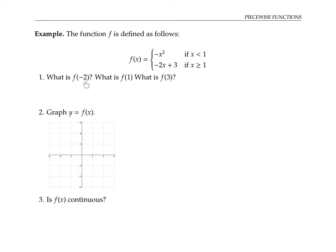So if we want to find f of negative two, well, negative two is less than one, so the first rule applies. And we compute f of negative two by plugging in negative two for x in the first rule. So that's negative four.